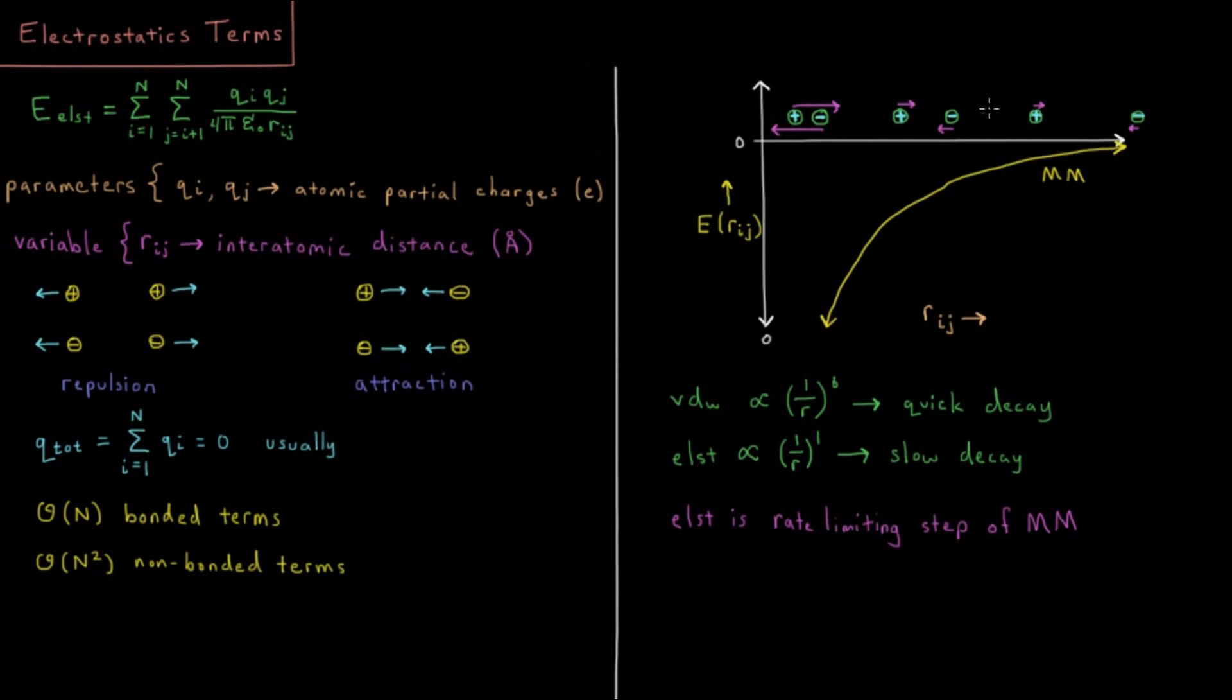If we map this out, if we assume we have particles that are oppositely charged, if they were the same charge the graph would be the same except for it would be a mirror image on the other side of our x-axis here.